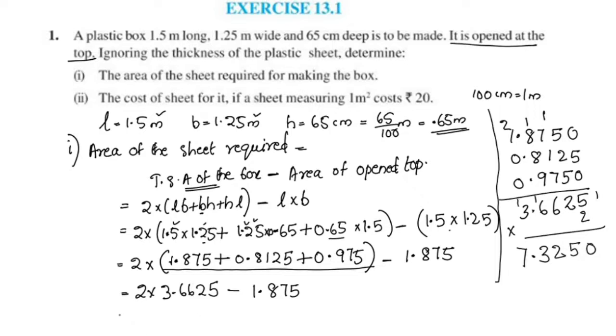This gives 7.325 minus 1.875, which equals 5.45.